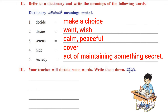Let's see the second roman. Here some words are given. We have to write down their meanings. You can take the help of a dictionary also. First one: Decide — meaning, make a choice. Next: Desire — means want or wish. Third one: Serene — meaning, calm or peaceful. Fourth one: Hide — means cover. Next: Secrecy — meaning, act of maintaining something secret.